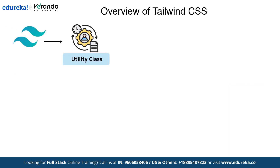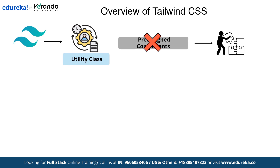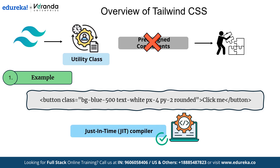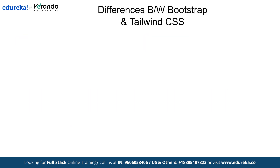Tailwind CSS is a utility-first framework that takes a completely different approach compared to Bootstrap. Instead of providing pre-built components, it gives you utility classes to build your own design from scratch. For example, if you need a button, instead of using a predefined class like Bootstrap, you combine multiple utility classes. Another cool thing about Tailwind is its just-in-time compiler, which generates only the styles you need, making your final CSS much smaller and optimized for performance.